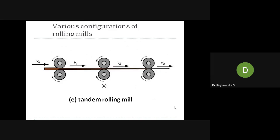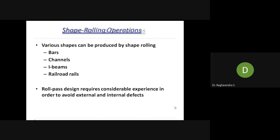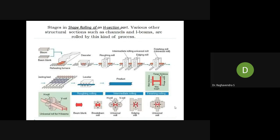A tandem rolling mill is a configuration of a series of two-roll mills used in sequence. At each stage, a little squeezing operation is done, and the material is pulled to the second stage, then the third stage, and so on. Various shapes can be produced by shape rolling — bars, railroad tracks are a very good example. Different shapes include edge, cross-section, and I-cross-section configurations.